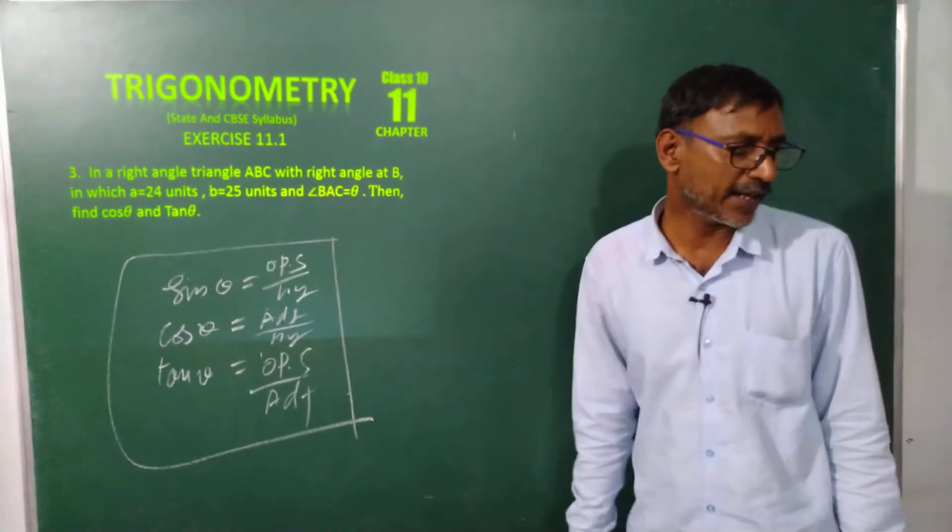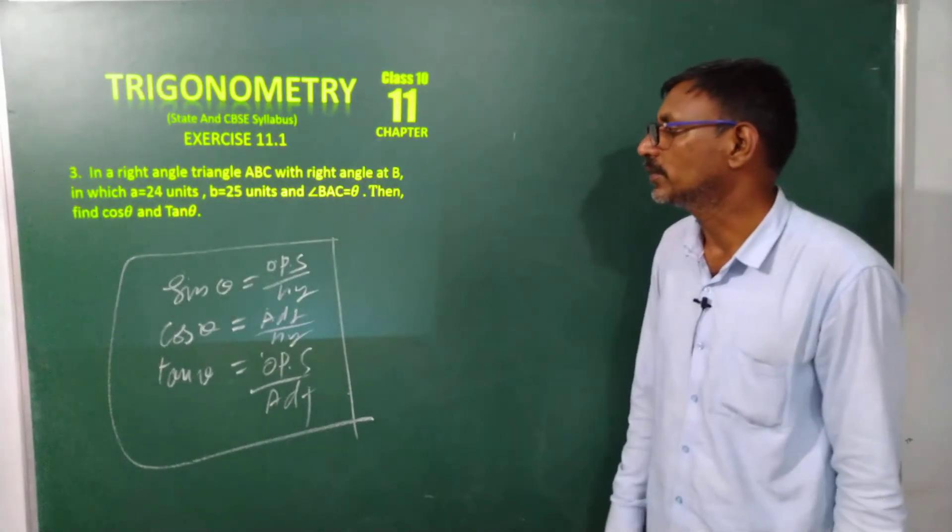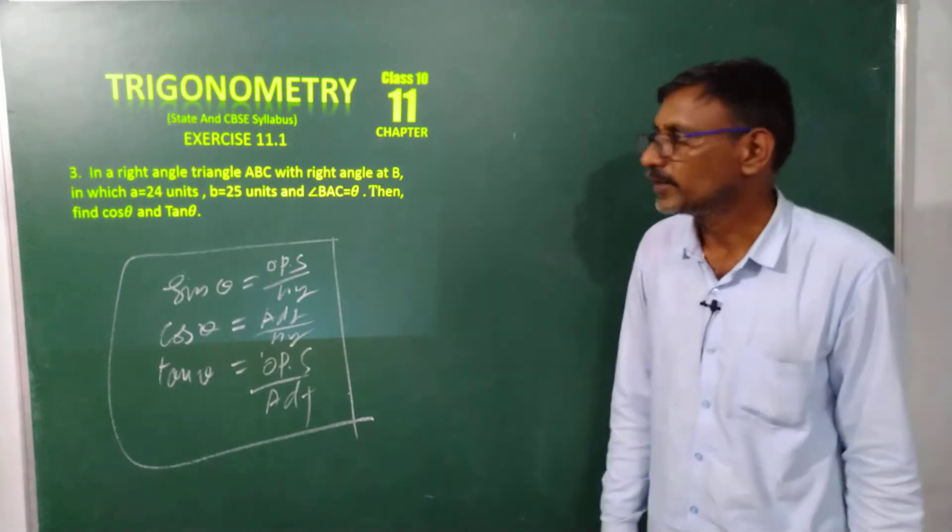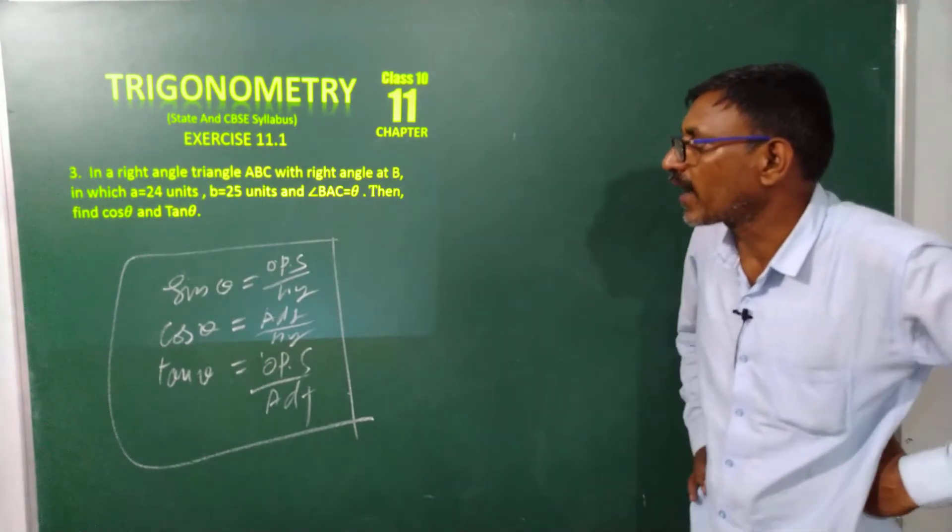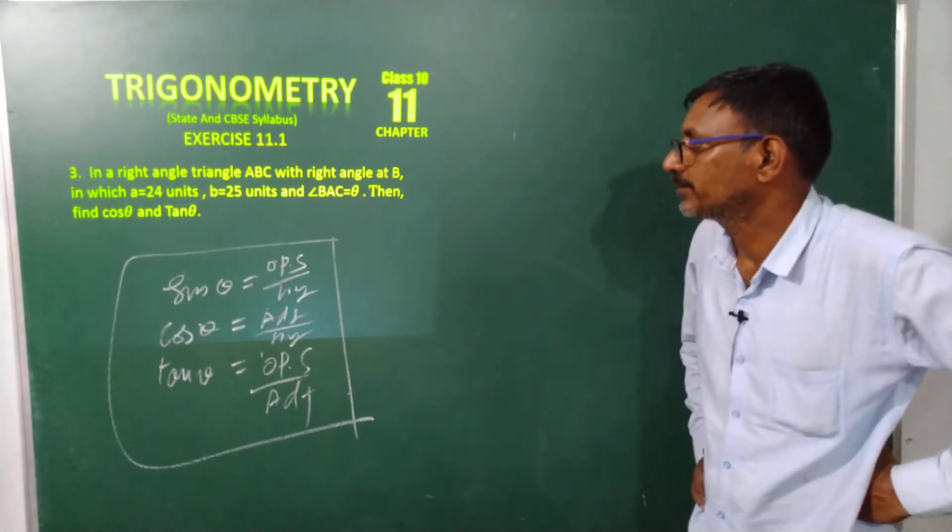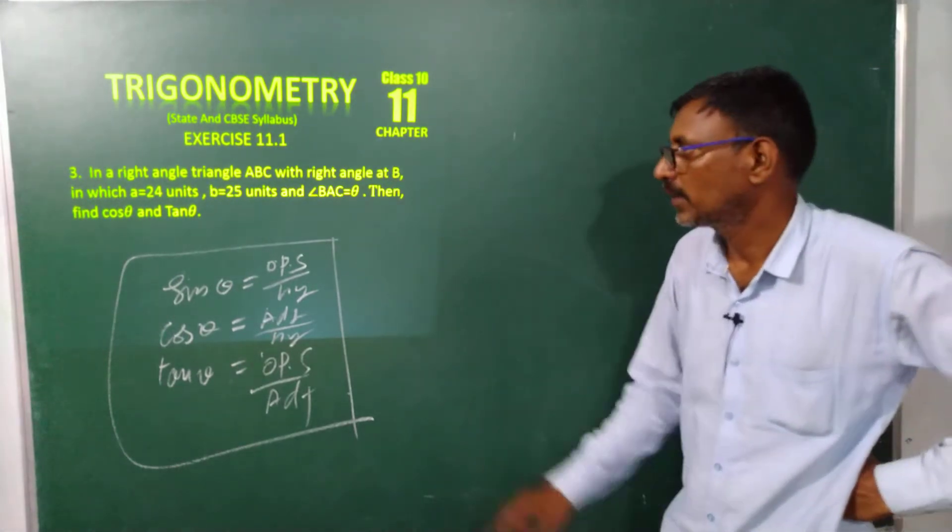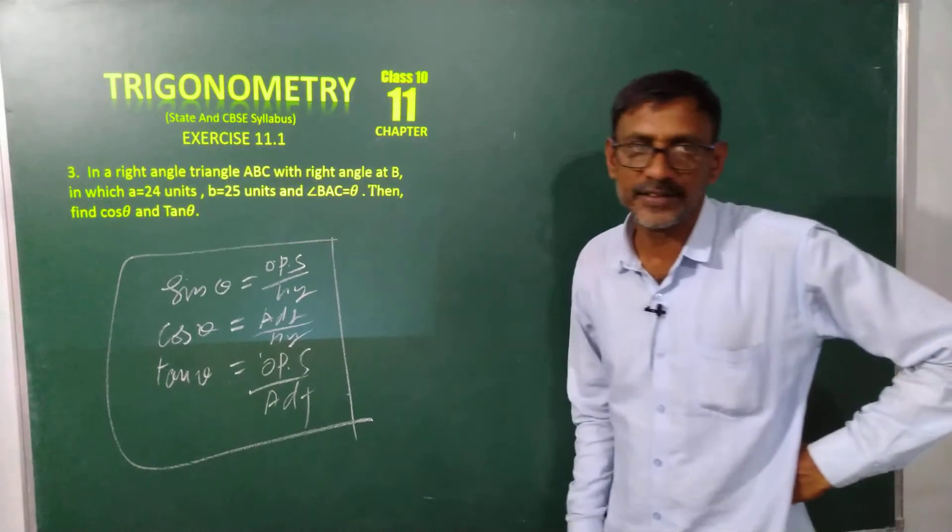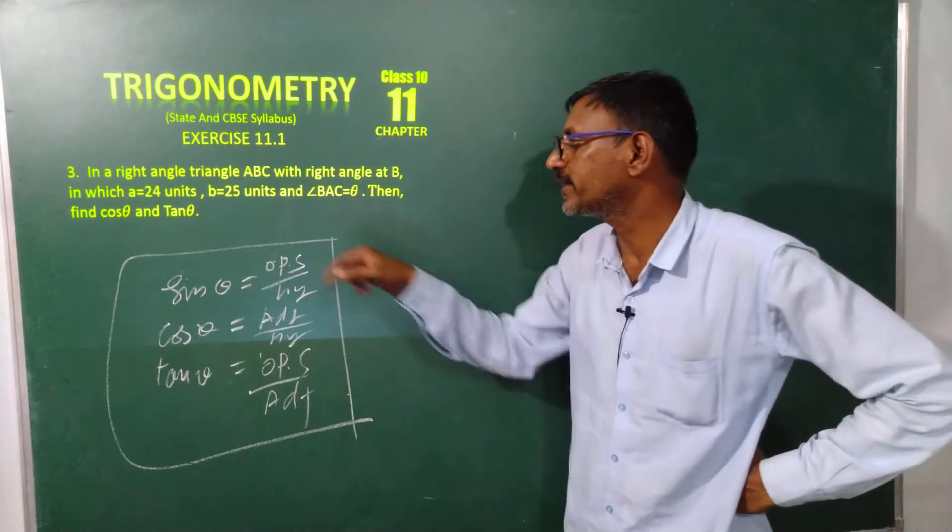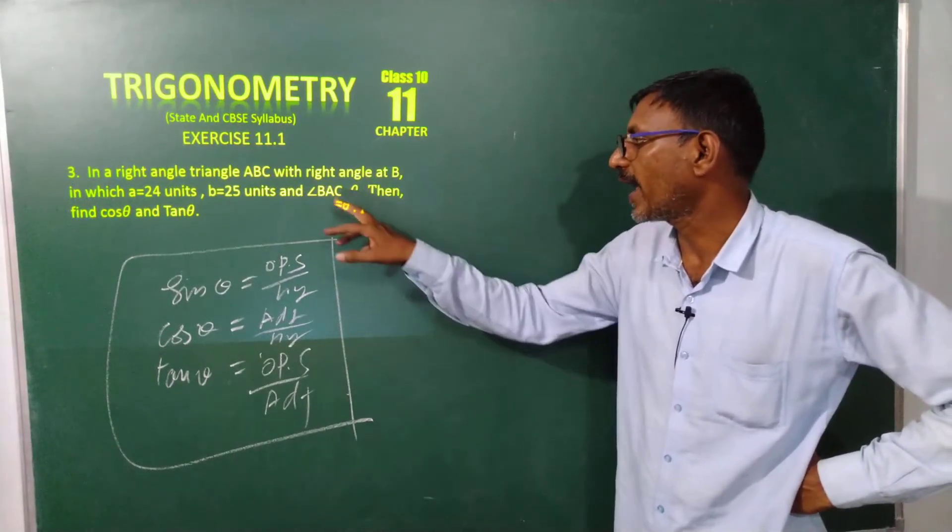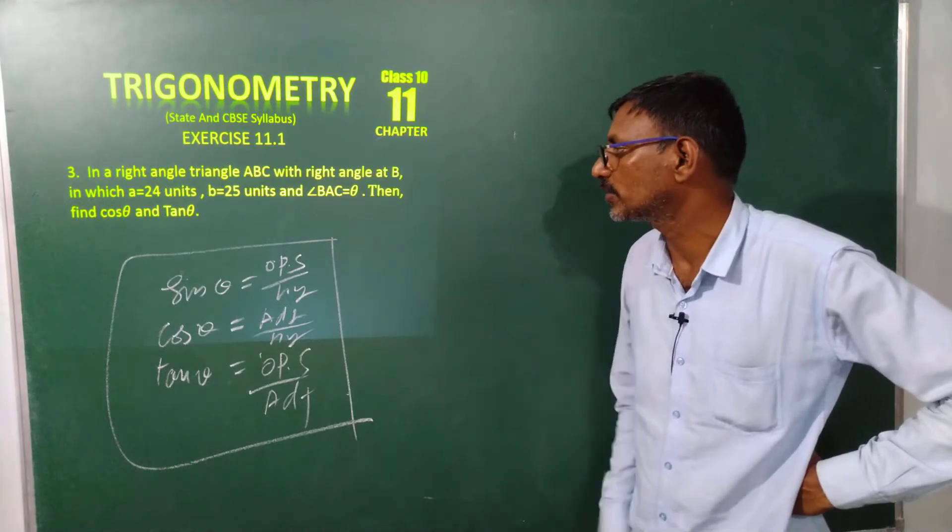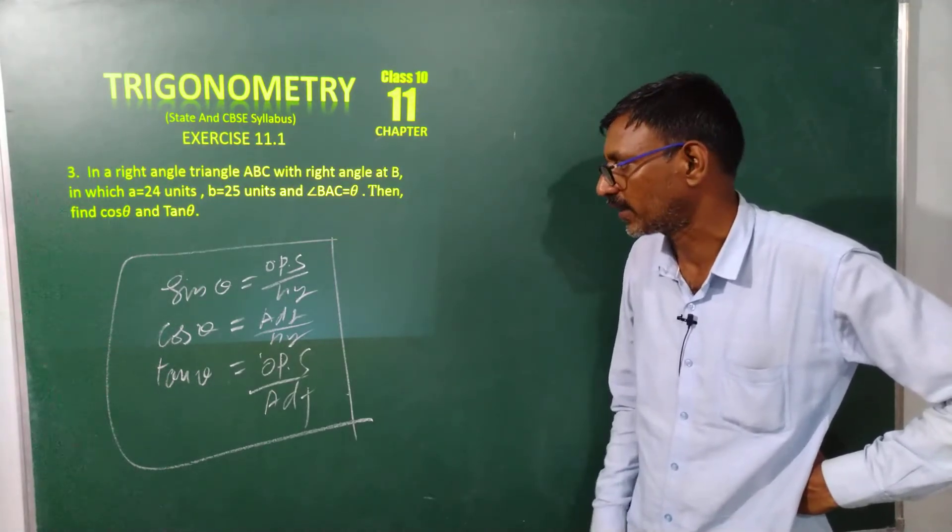I already explained second problem, now we are coming to third problem. In right angle triangle ABC with right angle at B, in which A is equal to 24 and B is equal to 25, and angle BAC is equal to theta, then find cos theta and tan theta.